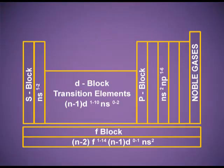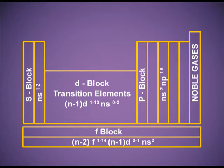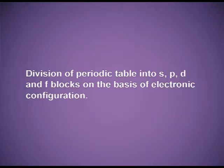This naming system was accepted by one and all. Now, the periodic table is subdivided into four blocks — the S, P, D, and F blocks — on the basis of the electronic configuration and the last electron entering the valence subshell.